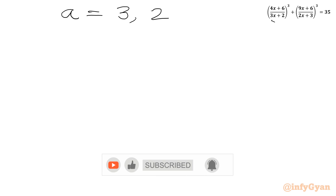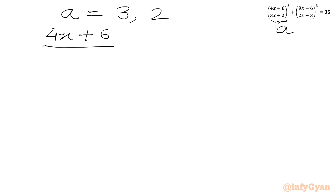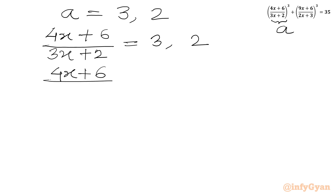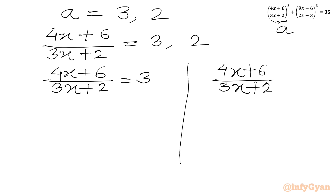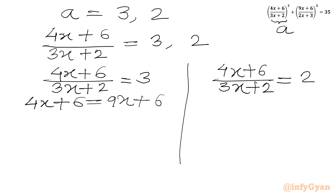Now a was our substitution — that bracket itself was a. So we write (4x plus 6) over (3x plus 2) equal to 3 and 2. For the first equation, (4x plus 6) over (3x plus 2) equal to 3: cross-multiplying gives 4x plus 6 equal to 9x plus 6. The 6's cancel, so 5x equal to 0, therefore x equal to 0 — our first real solution.